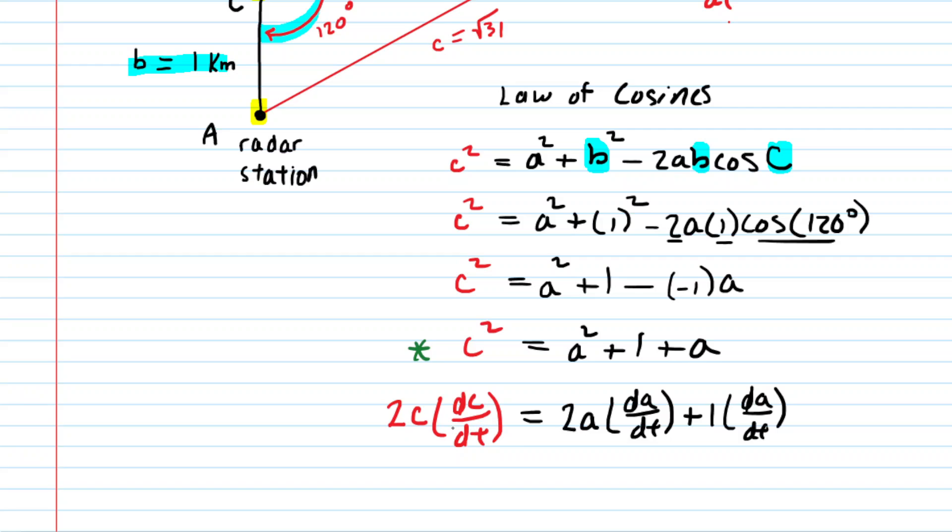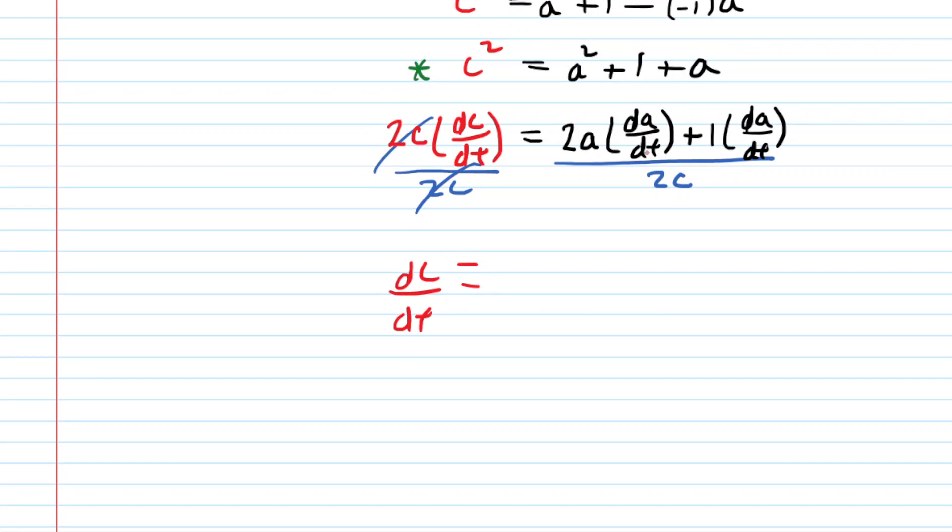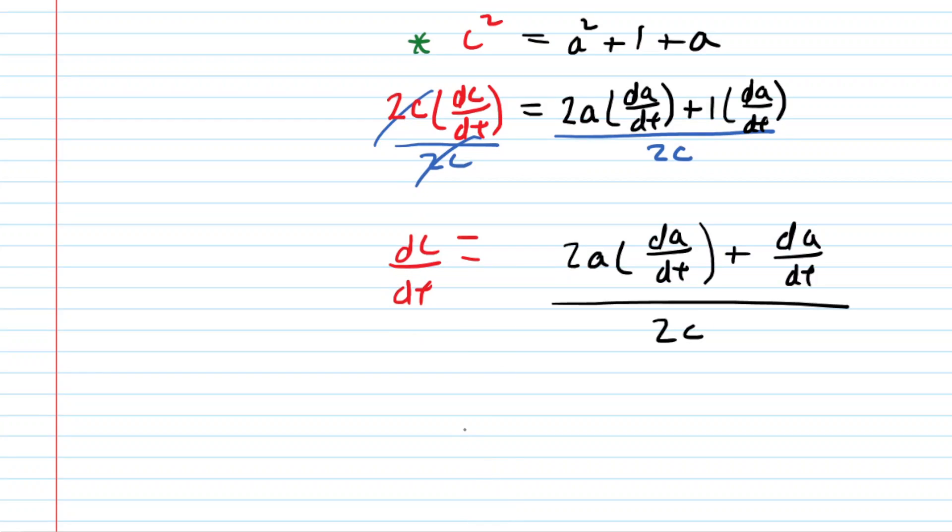So this is great. Now what we're going to do is solve for dc/dt, and to do that, we will divide both sides of the equation by 2c. Doing so cancels it out on the left-hand side, and now we have it. We have dc/dt is equal to the expression on the right. And the next and last thing we need to do to solve for dc/dt is just plug in all of the known values, which we listed earlier.